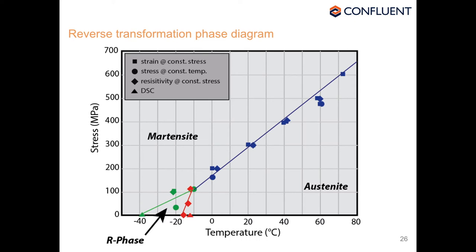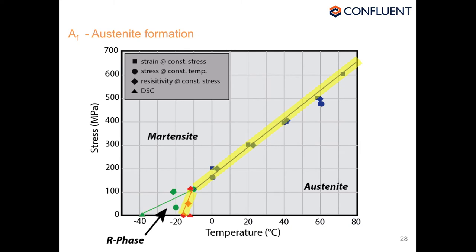DSC can again verify the phase diagram intersections. The key point: M* — martensite reversion — is the right question, equivalent to asking 'when does ice revert?' What the industry currently uses is A_F — when does the high-entropy austenite form, equivalent to asking 'when does steam form?' That's why the skater drowned. In medical devices we ask where is A_F, but the right question is when does martensite revert. There is a definite and important difference.